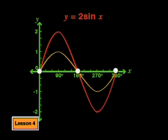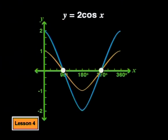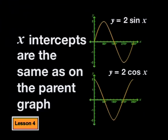Let's compare the x-intercepts of both sets of graphs. The points at which each graph cuts the x-axis have stayed the same, because 2 times 0 is still 0. Now that we've seen what happens when we increase the value of a, let's look at what happens when we decrease the value of a.